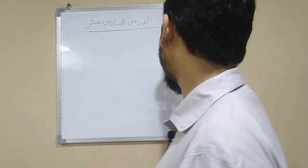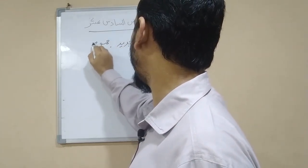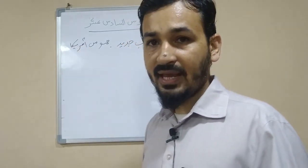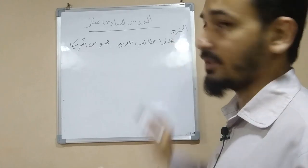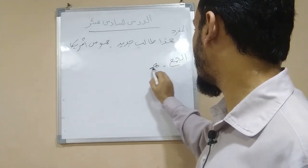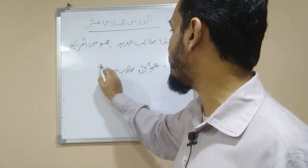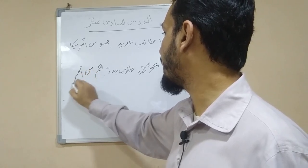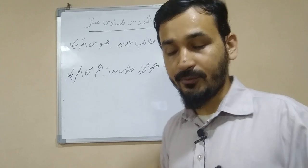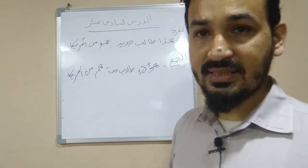Now we have exercises — at-tamarin. First, consider these examples. Number one, mufrad (singular): 'haadha talibun jadidun, huwa min Amerika' — this is a new student, he is from America. Now for the plural (jam'): 'haadha' becomes 'ha'ula'i,' 'talibun' becomes 'tullab,' 'jadidun' becomes 'judud,' and 'huwa' becomes 'hum' — they are from America.